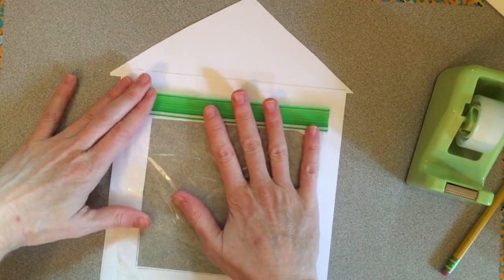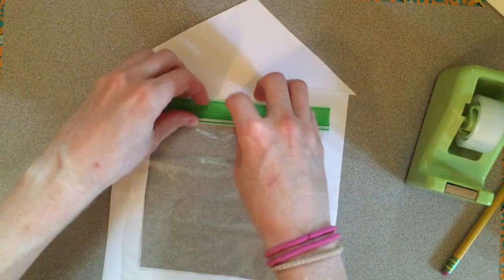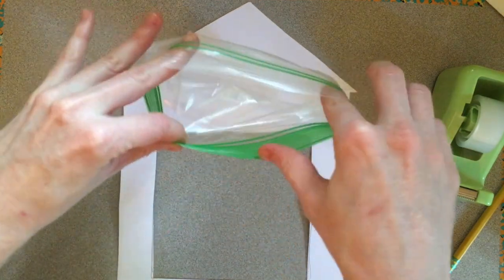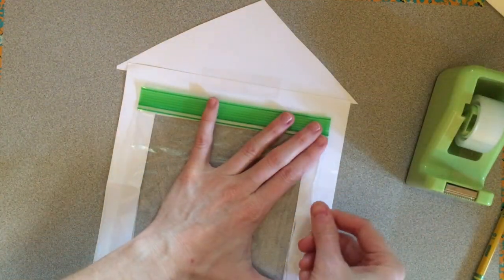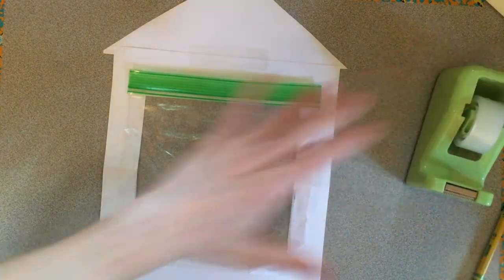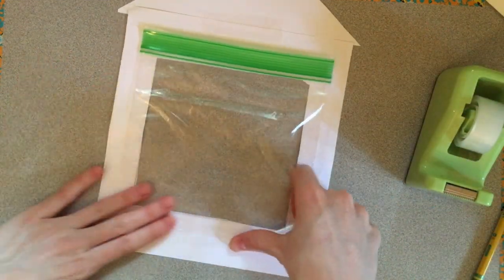And then put the Ziploc bag on the back of your paper. And we're going to open the bag and tape three sides down. We want the top to be open so that we can put the seeds inside.